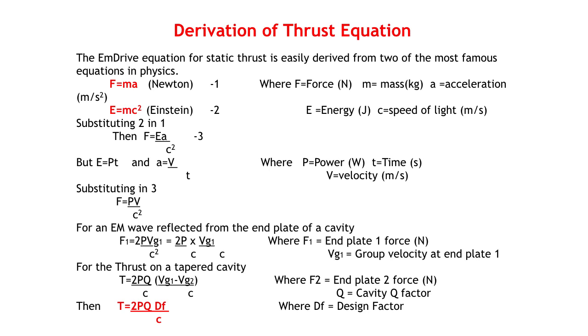Now for an electromagnetic wave reflected from the end plate of the cavity, the force is doubled because there is the force of the impacting wave plus the reaction force of the reflected wave. So we get F1 equals 2P Vg1 over C squared. This can be written as F1 equals 2P over C times Vg1 over C, which is the standard equation for radiation pressure times the ratio of Vg1 to C.